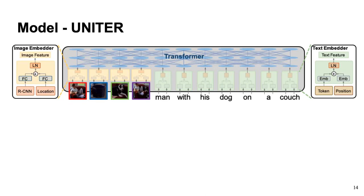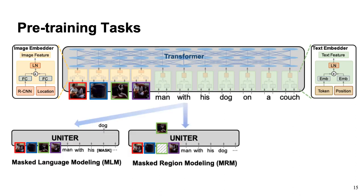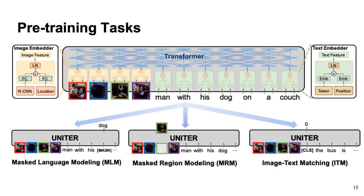UNITER is trained with three pre-training tasks: masked language modeling, masked region modeling, and image-text matching. For masked language modeling, it's just like BERT — you mask certain tokens and predict them. For masked region modeling, instead of masking tokens, we mask certain object regions and predict those missing regions given both visual and textual context.